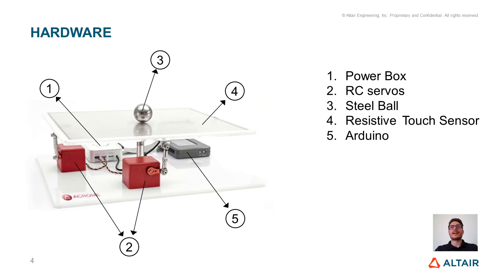In the BBT we can identify five main components which are the power box, RC servos, steel ball, the CC touch sensor and the Arduino. The objective of this mechatronic system is to control the position of the ball. The ball position measured by the touch sensor is fed as input to the controller which, comparing it with a reference, produces an error signal.